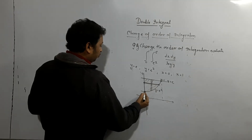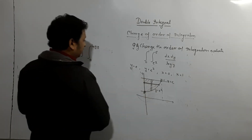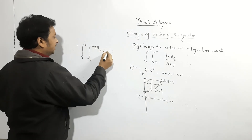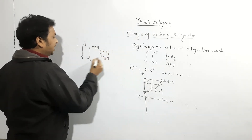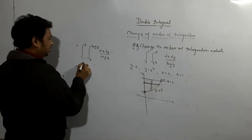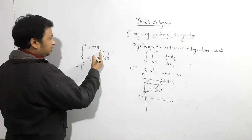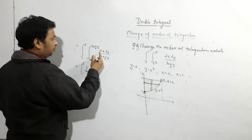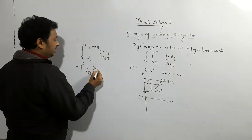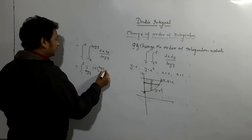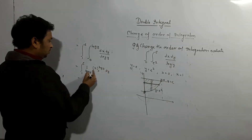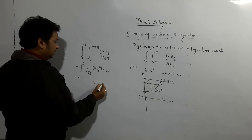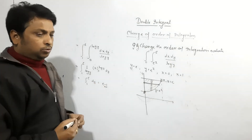The y limit starts from 1 and goes up to e. So we integrate x from 0 to log y, and y from 1 to e — that is (1/log y) × x evaluated from 0 to log y, dy. So (1/log y) × log y = 1, and the log y cancels. It becomes the integral from 1 to e of dy, which equals e − 1. That is the answer.